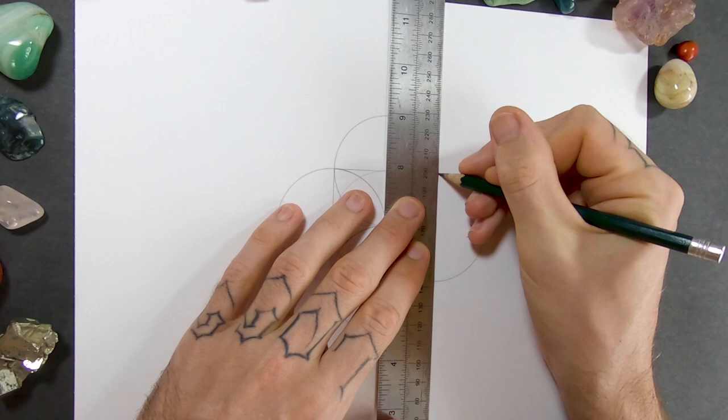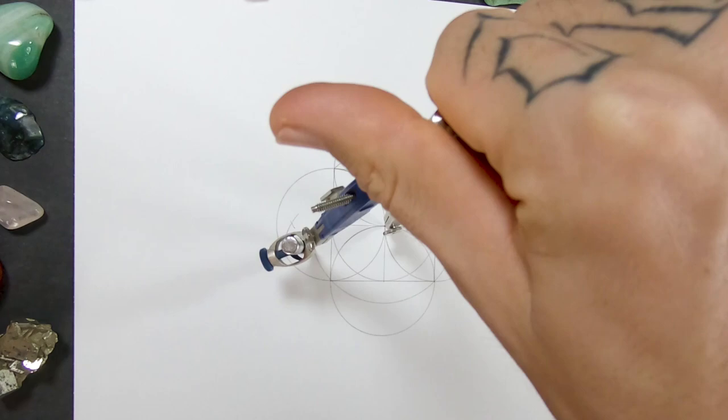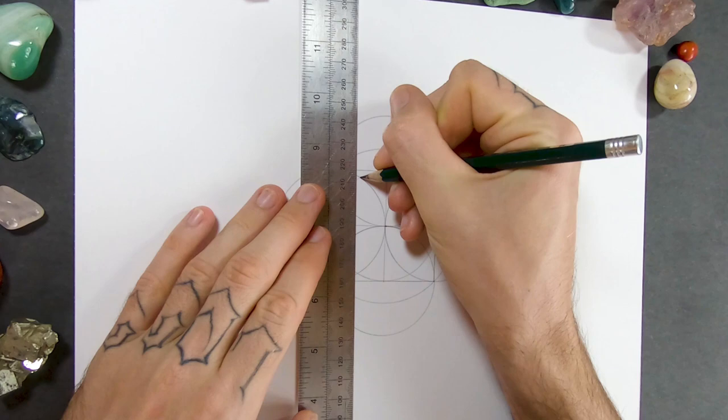I'll use the same points as a guide to draw a slightly larger circle in the center. Then I'll use the points where all the circles cross to create a grid inside the square, making sure that the lines extend until they touch the larger circle I just drew.